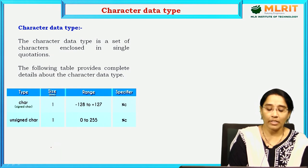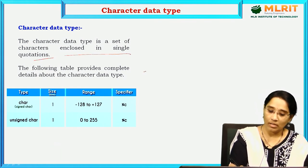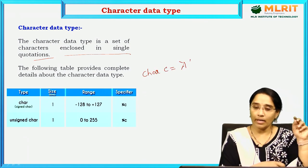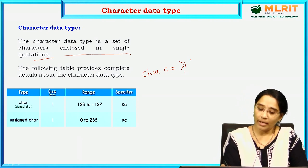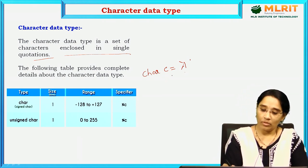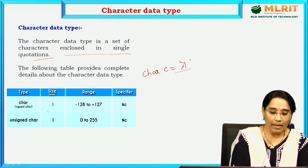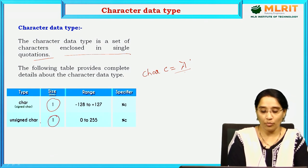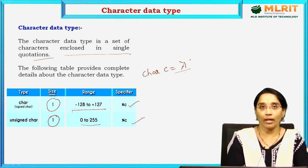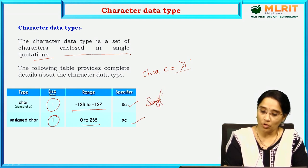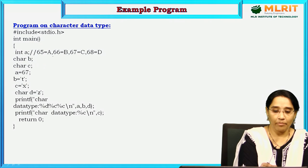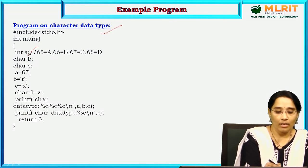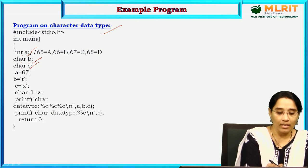Character data type is a set of characters enclosed in single quotes. If I want to assign character data 'a' to variable c, this is the character data type assignment. The size of the character data type is 1 byte; unsigned char is also 1 byte. The range is from minus 128 to 127, and unsigned char is 0 to 255. The format specifier for character is %c.